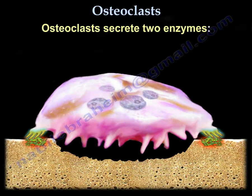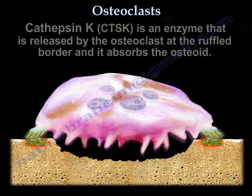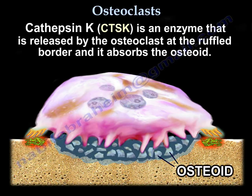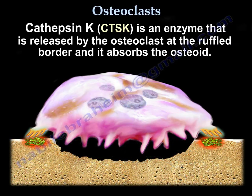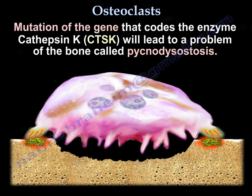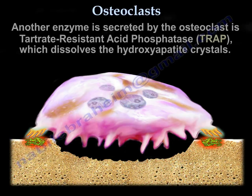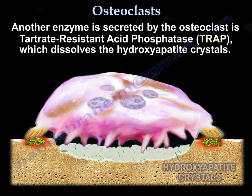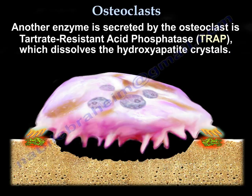The osteoclast secretes two enzymes. The first is Cathepsin K, an enzyme released at the ruffled border that absorbs the osteoid. Mutation of its gene leads to a bone disease called pycnodysostosis. The second enzyme is tartrate-resistant acid phosphatase (TRAP), which dissolves the hydroxyapatite crystals.